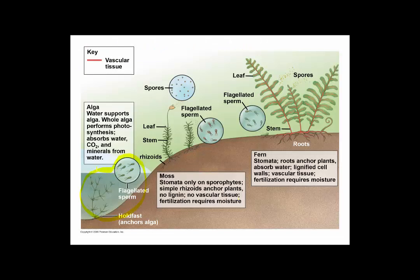Algae are not plants. They have sperm that need to swim through water to reach the eggs, which — the female gametes might be in the water as well. Mosses are non-vascular plants, so they tend to be small. They have to have environmental water for the sperm to swim to the egg, and they reproduce in part by spores — about which more later.